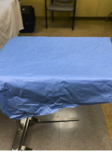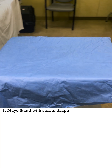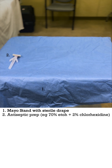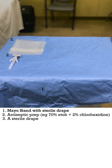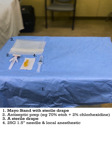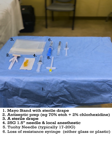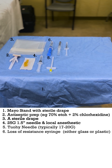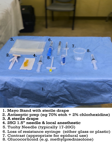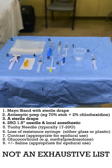First things first, you need a mayo stand with a sterile drape, a chloroprep, a drape, a 25-gauge one-and-a-half inch needle with local anesthetic, two needle loss-of-resistance syringes — we have plastic and glass — and a three cc syringe, which we sometimes use with contrast and a glucocorticoid for injection, plus or minus saline.